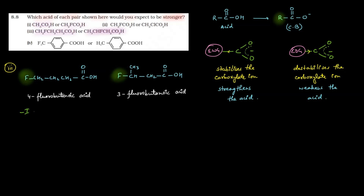Now, the -I effect of fluorine is distance dependent. The closer the fluorine is to the carboxylate group, the more it pulls electron density, and the more it stabilizes the carboxylate ion — making the acid stronger. Since 3-fluorobutanoic acid has fluorine closer to the carboxylic acid group, it will be the stronger acid.